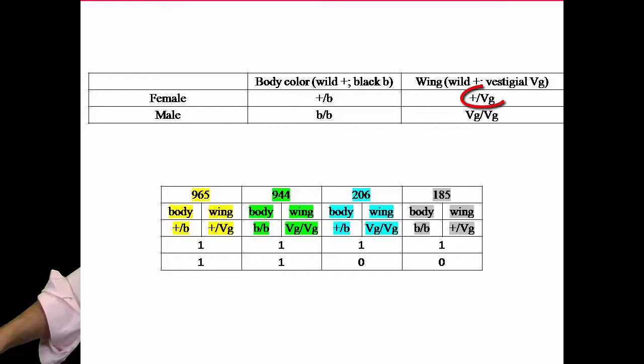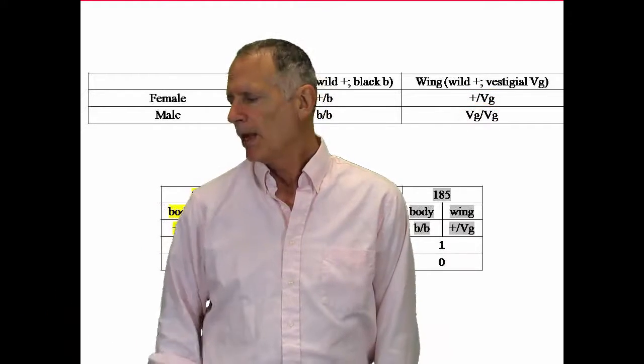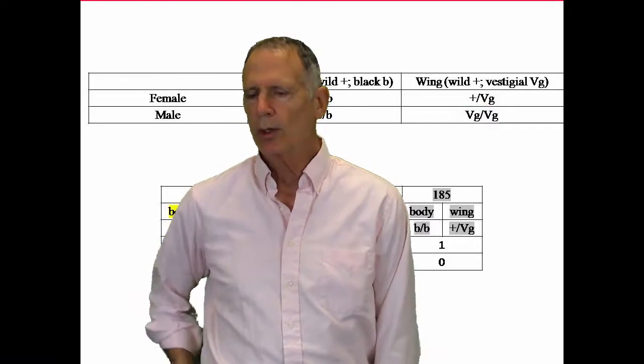The wing type is going to be pretty much the same. The female is going to have a dominant wild type with a recessive vestigial type. Male is going to have vestigial, vestigial. And when you mix those, what Morgan got,